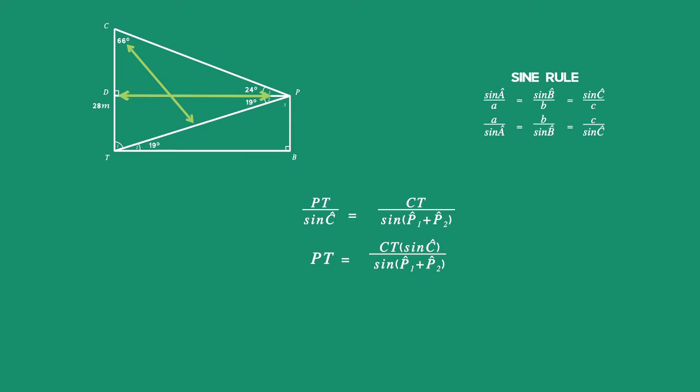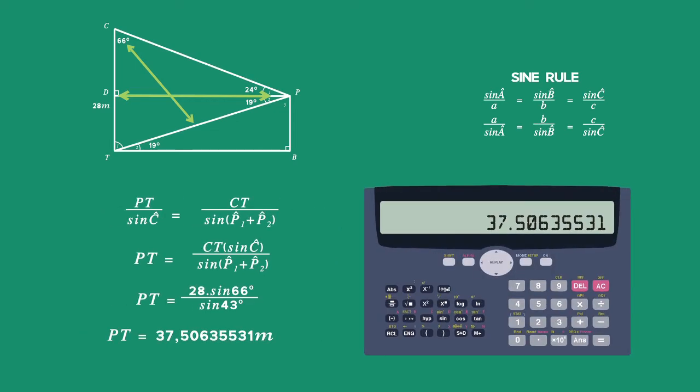Substitute values for CT, angle C and the sum of angle P1 and 2 and using your calculator you get PT is equal to 37.5 meters.